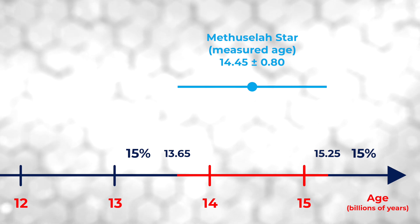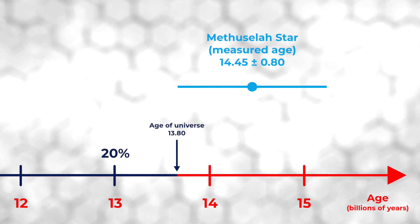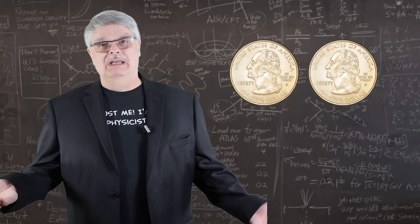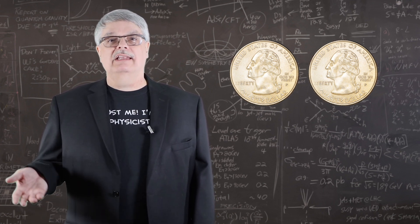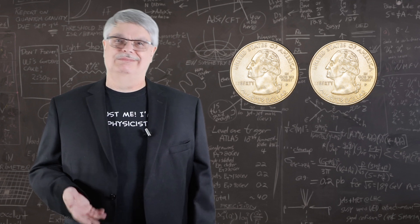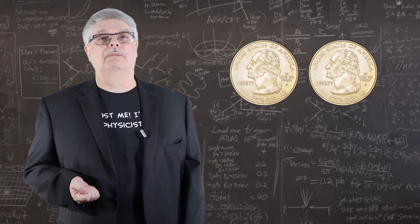And if you properly compare the estimates of the age of the star and the universe, you find that the current estimate for the age of the Methuselah star means that there is about a 20% chance that its true age is lower than the best estimate of the age of the universe. Ballpark, that's about the same as flipping a fair coin twice and having it come up heads both times. It's really not so unlikely.